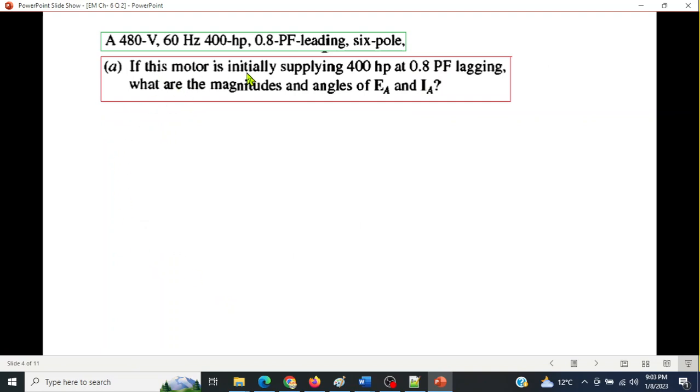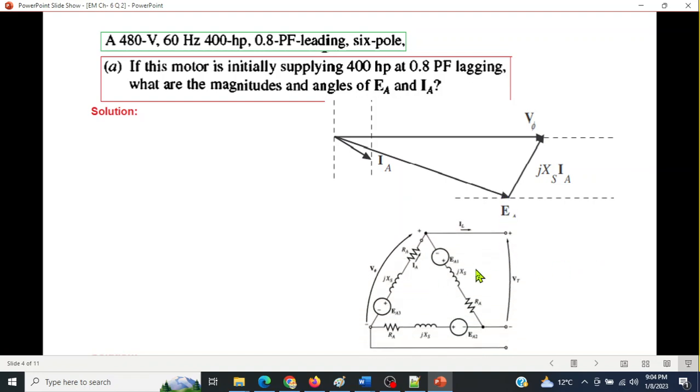The first part is if the motor is initially supplying 400 horsepower at 0.8 power factor lagging. What are the magnitudes and angle of Ea and Ia? I hope you remember what is Ea and what is Ia. First of all, let's see the phase diagram.